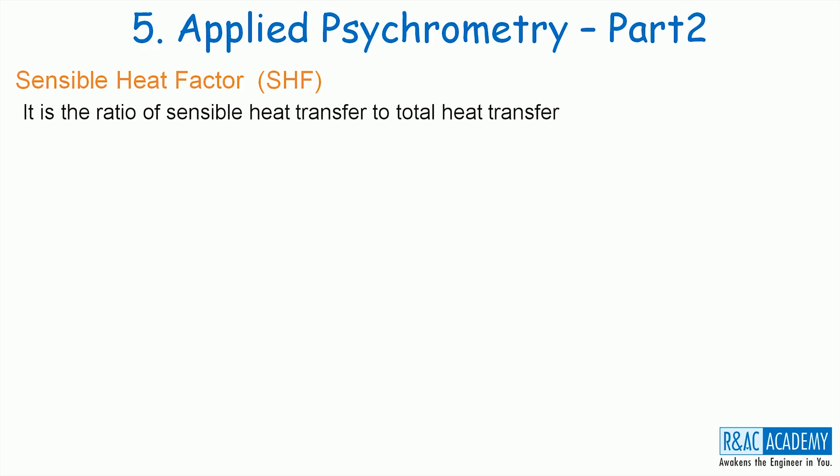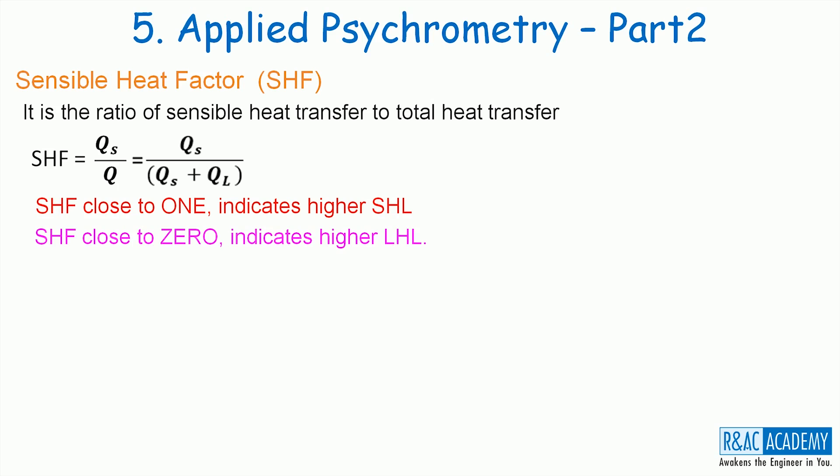It is the ratio of sensible heat to the total heat, expressed as SHF equals Qs divided by Q, which further can be expanded. From this expression, we can say that whenever the sensible heat load is more than the latent heat load, then SHF will be close to 1. And whenever the latent heat load is more than the sensible heat load, then the SHF will be close to 0.